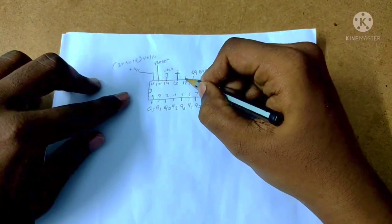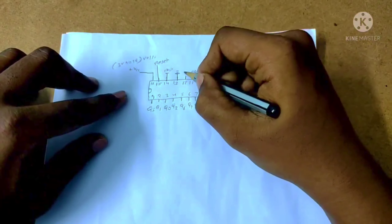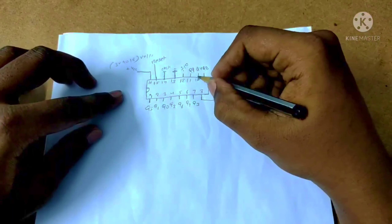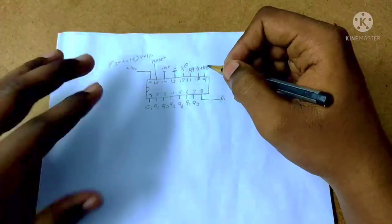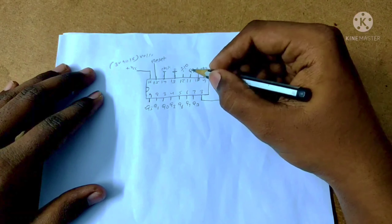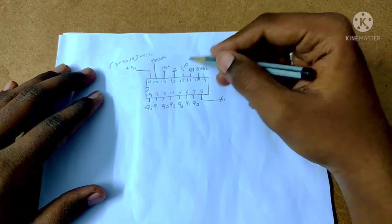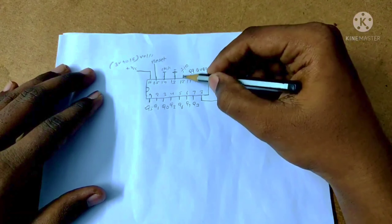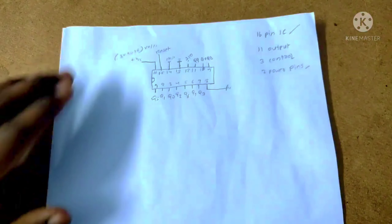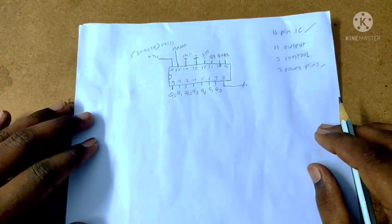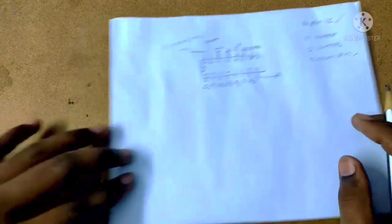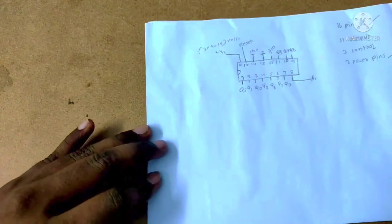The 12th pin is the carry out, divide-by-10 output. The first output is half of the input signal. The 15th pin reset and 12th pin carry-out together form the total circuit. Then the pins output 10 and 1.